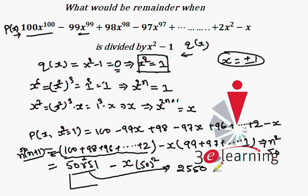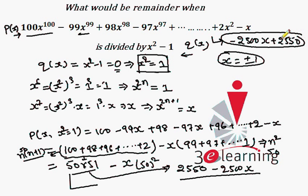So my remainder is this. If we write the remainder in a proper form, the remainder is minus 2500x plus 2550. That is my answer.